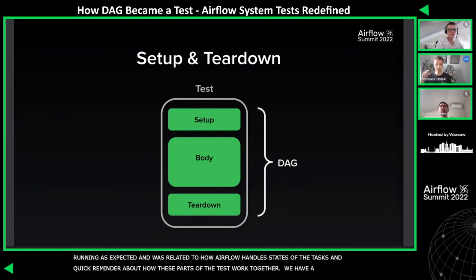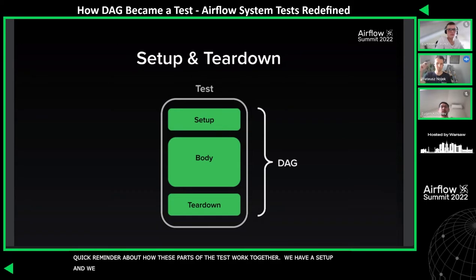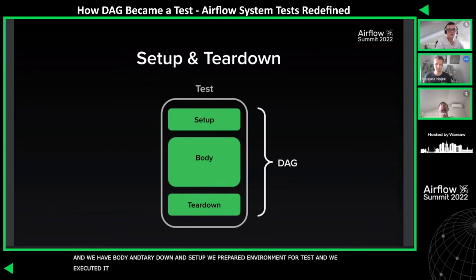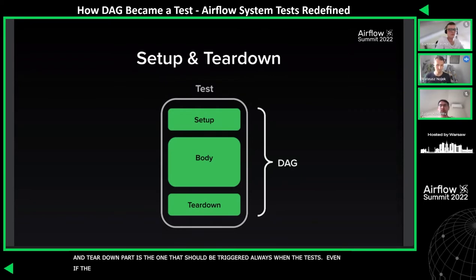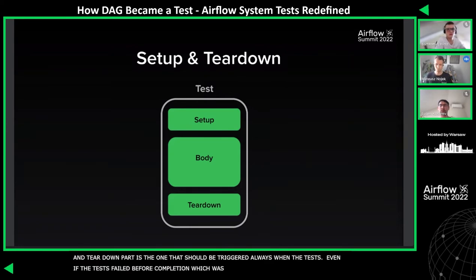We then stepped upon another challenging task. The teardown task was not always running as we expected, related to how Airflow handles the states of tasks. Just a quick reminder: we have setup, body, and teardown. In setup we prepare the environment; in body we execute it; in teardown we clean up. When something fails in any of those parts, the test should fail. The teardown should always be triggered even if the test failed before completion — and that was the problem with our design. When there was a failure, the teardown task's state was propagated to the DAG, shadowing the real state of the test.